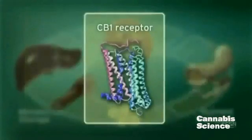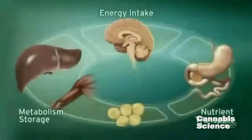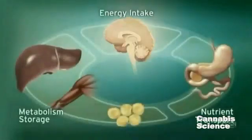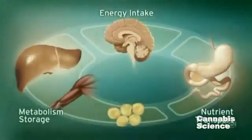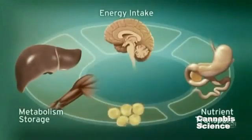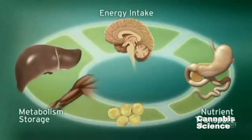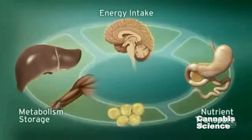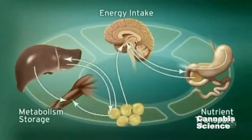CB1 receptors are located in the brain, digestive tract, muscle, and adipose tissue. Integration of these central and peripheral ECS components is achieved through neuronal and hormonal signaling.